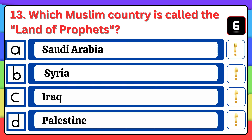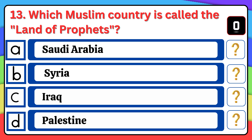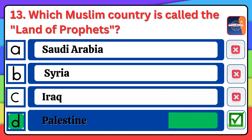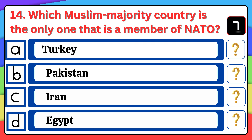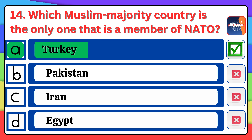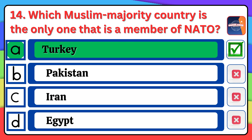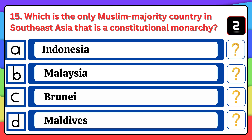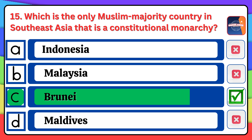How many Muslim countries are there in Asia? The right answer is option C, 3. Which Muslim country is called the land of prophets? Which Muslim country is the only one that is a member of NATO? The right answer is option A, Turkey.